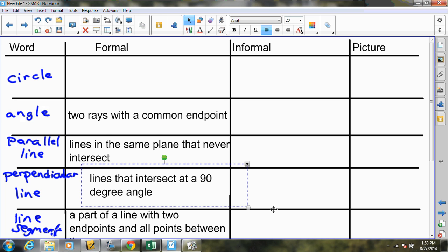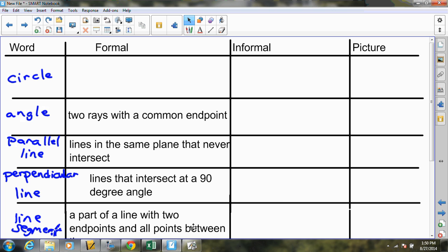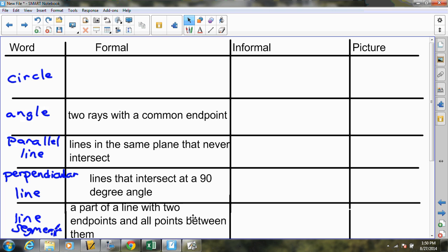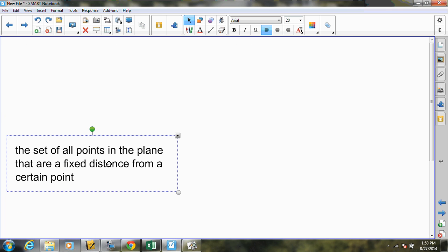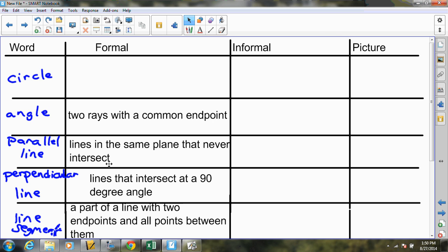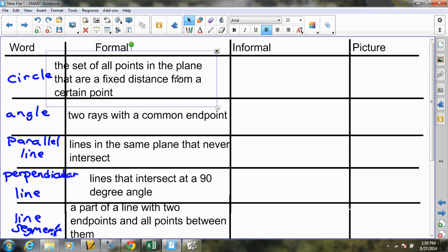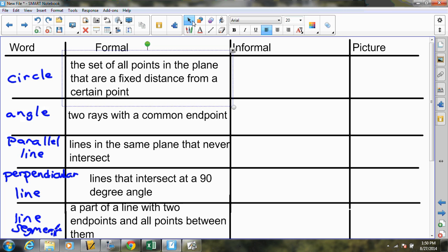The line segment should be able to get quickly because it's part of a line. And that will, of course, leave us with the last one. And we'll take the definition for a circle. So there we go.